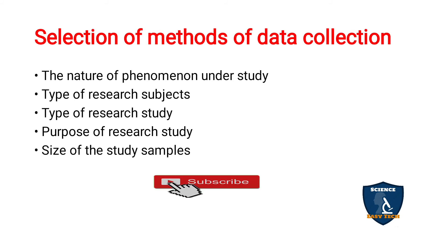The nature of the phenomena refers to what problem you are studying — whether it is experimental, descriptive, or another type. The type of research subjects refers to who your participants are. Based on their education level, area, and understanding, your method of data collection will vary.